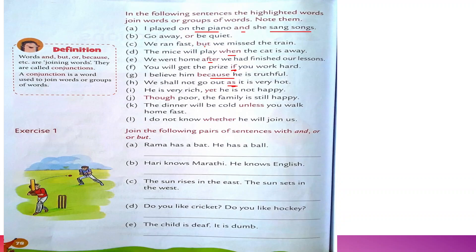You can see that conjunction words generally appear in the middle of a sentence, but it is not always necessary — they can also come at the front. When a conjunction word is used at the beginning, we use a comma to separate the two parts: 'Though poor, the family is still happy.' 'Unless you walk home fast, the dinner will be cold.' 'I do not know whether he will join us.' 'Unless' and 'whether' are also used to give conditions.